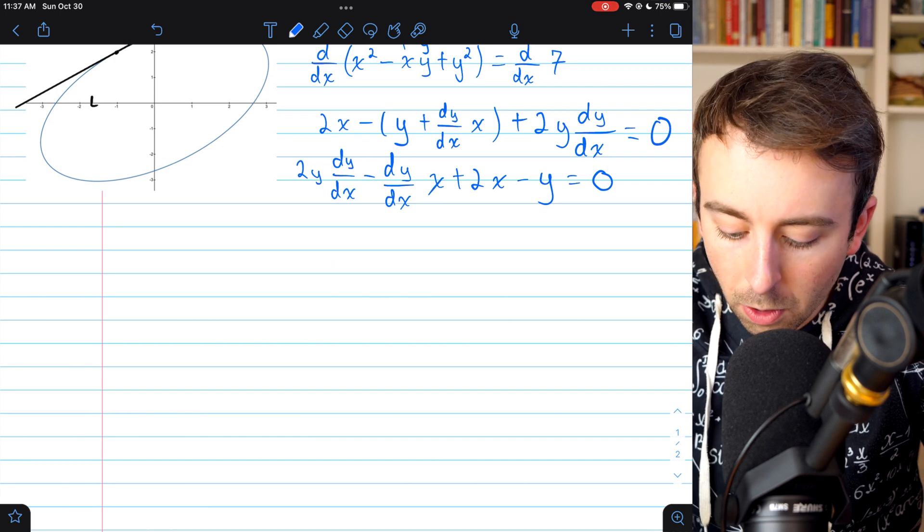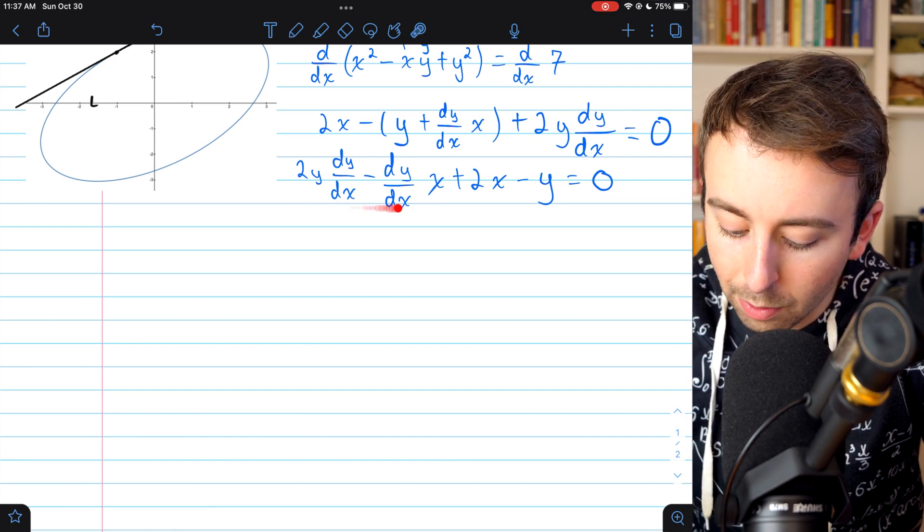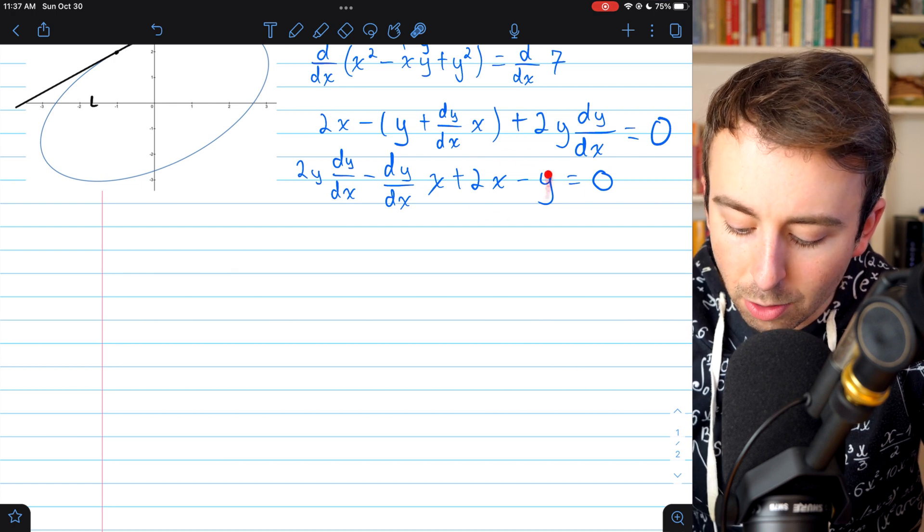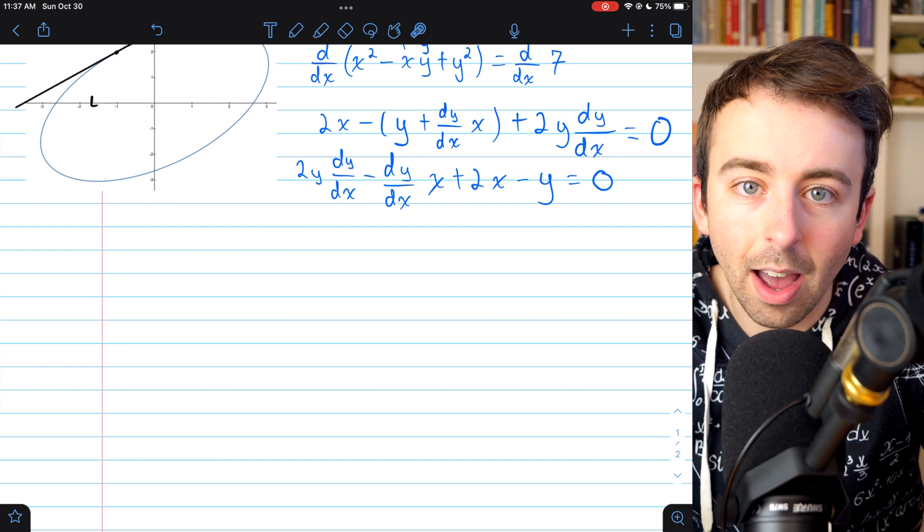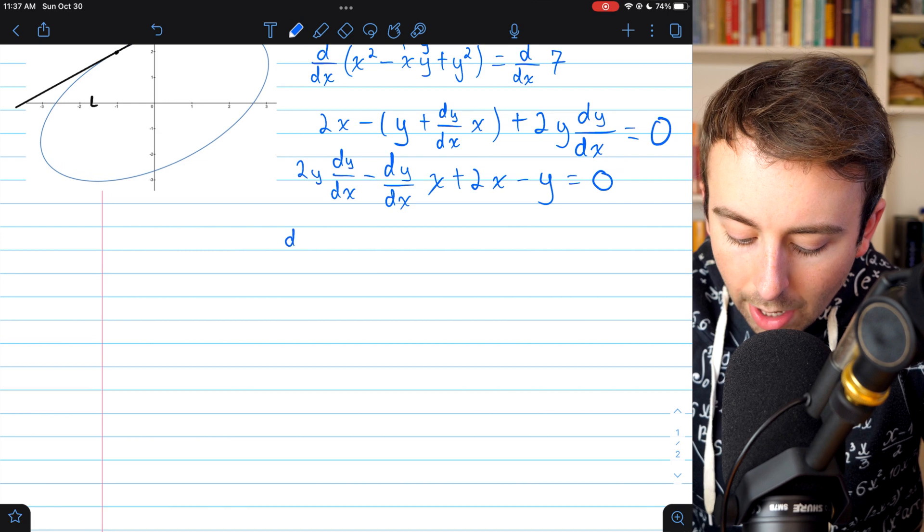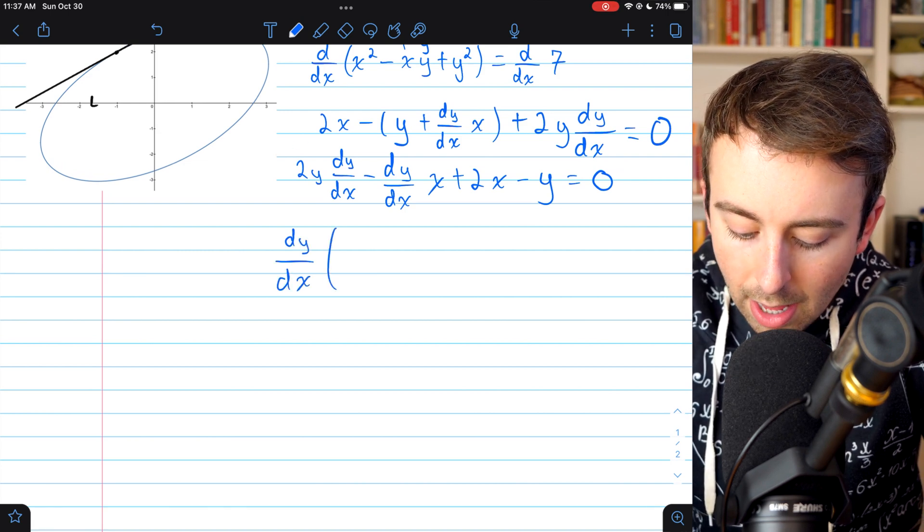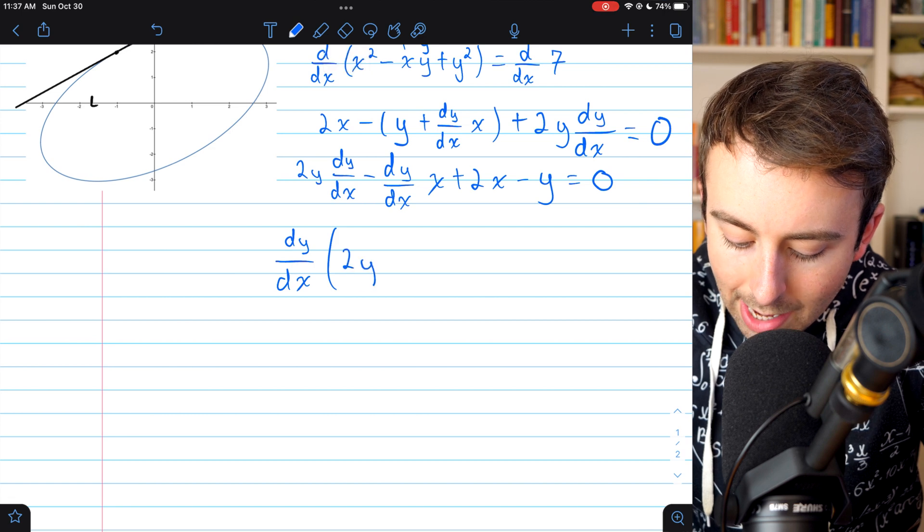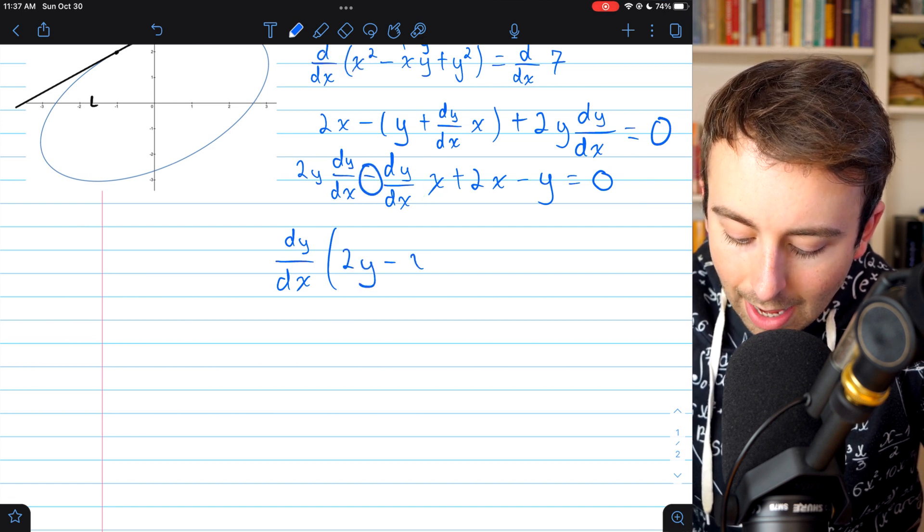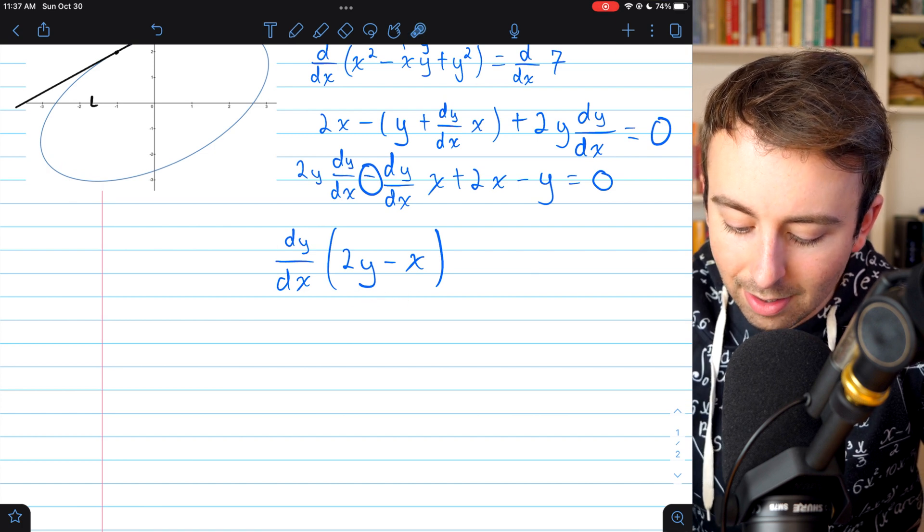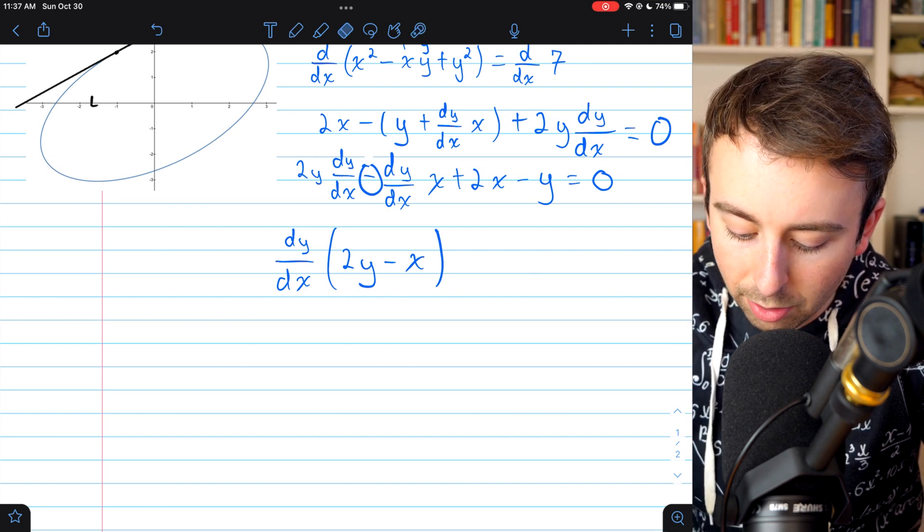Now we can factor dy/dx out of these first two terms and move these other two terms to the other side of the equation. So when I factor dy/dx out of the front two terms, I'll be left with 2y - x. You can see if we distribute this through the parentheses, we'll end up back where we started.